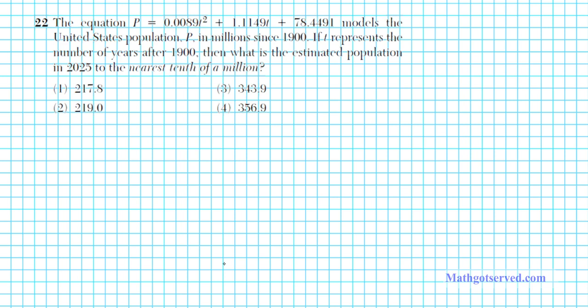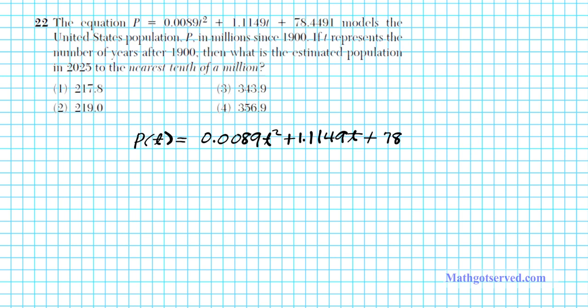Let's take a look at problem number 22. It says the equation p equals 0.0089t squared plus 1.1149t plus 78.4491 models the United States population p in millions since 1900. If t represents the number of years after 1900, then what is the estimated population in 2025 to the nearest tenth of a million? So with this model, all we have to do is find the value of t and then plug it in, evaluate the resulting expression, and that will tell us the population in 2025.